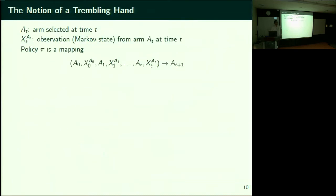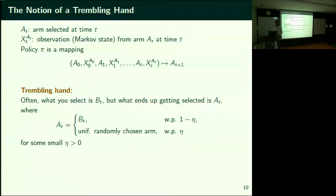In visual search experiments, often what is observed is that you want to look at a certain location, but you tend to sample a different location with a small probability — mostly you focus where you intend, but you tremble a bit and focus somewhere else. This is what we call a trembling hand. You intend to focus at location BT but your eye ends up at some other location AT. AT and BT are equal with probability 1−η, where η is a small parameter. With some small probability your eye actually focuses somewhere else.